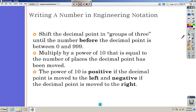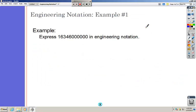Now to write a number in engineering notation, we do it in groups of three. The number before the decimal point could be between zero and 999, and then we use a power of 10, same thing. Left is positive, right is negative.